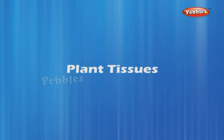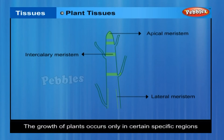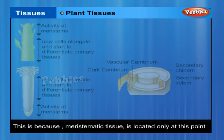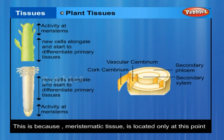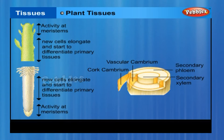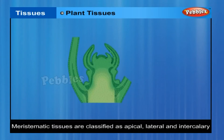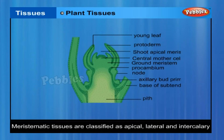Plant tissues. The growth of plants occurs only in certain specific regions. This is because the dividing tissue, also known as meristematic tissue, is located only at these points. Depending on the region where they are present, meristematic tissues are classified as apical, lateral and intercalary.